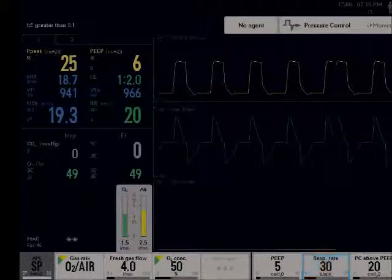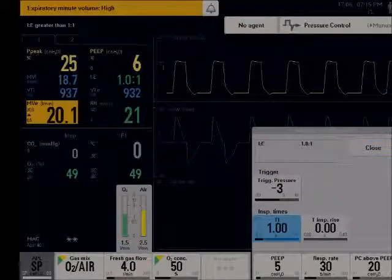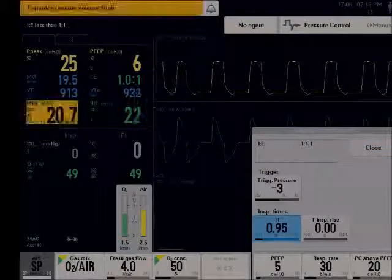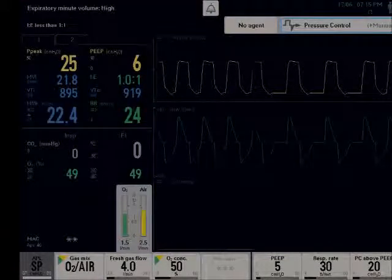Change the respiratory rate to 30, and I'm going to change the I time so I have the same IE ratio of 1 to 2. And let's go ahead and look at the measured PEEP, which hasn't changed at all. I'm changing the alarm right now.